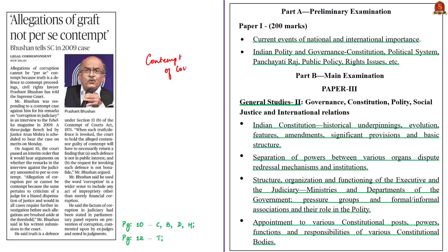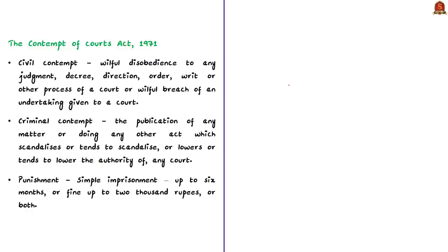The relevant syllabus is given here for your reference. As per the Contempt of Courts Act of 1971, there are two types of contempt — civil contempt and criminal contempt. Civil contempt means willful disobedience to any judgment, decree, direction, order, writ, or other process of a court, or a willful breach of an undertaking given to a court.